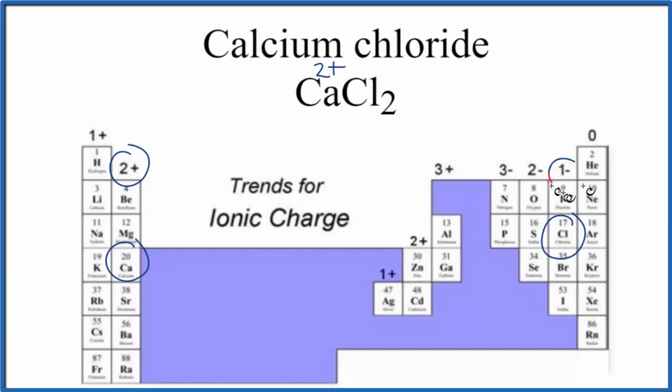Chlorine forms 1 minus ions. Because calcium has 2+, we need two of these negative charges on the chlorine ions, the chloride, to get a net charge of zero.